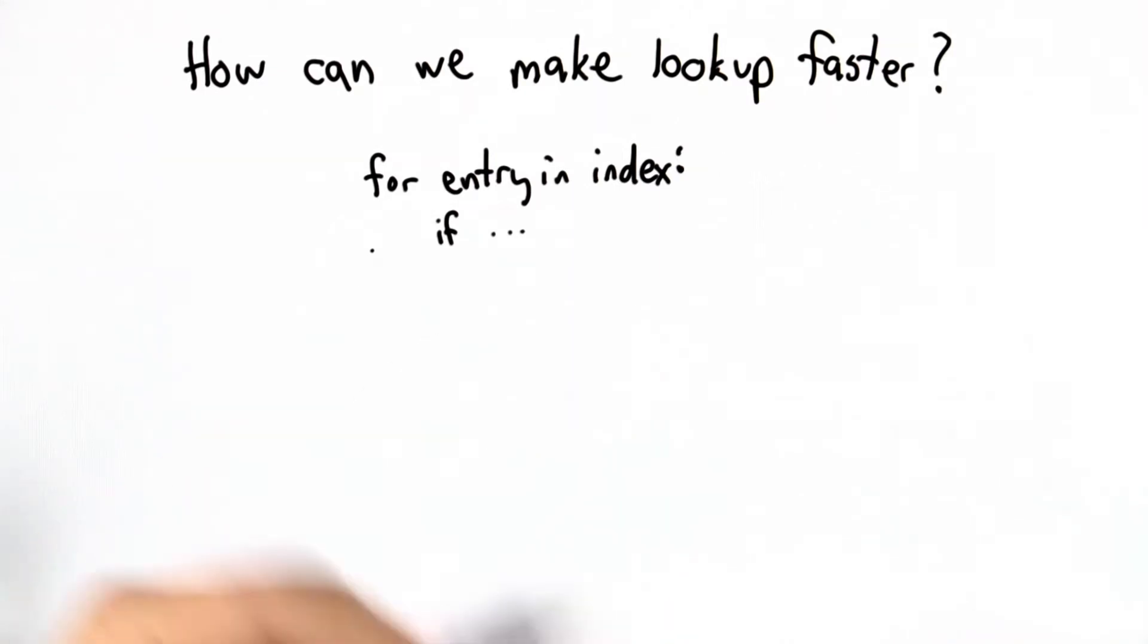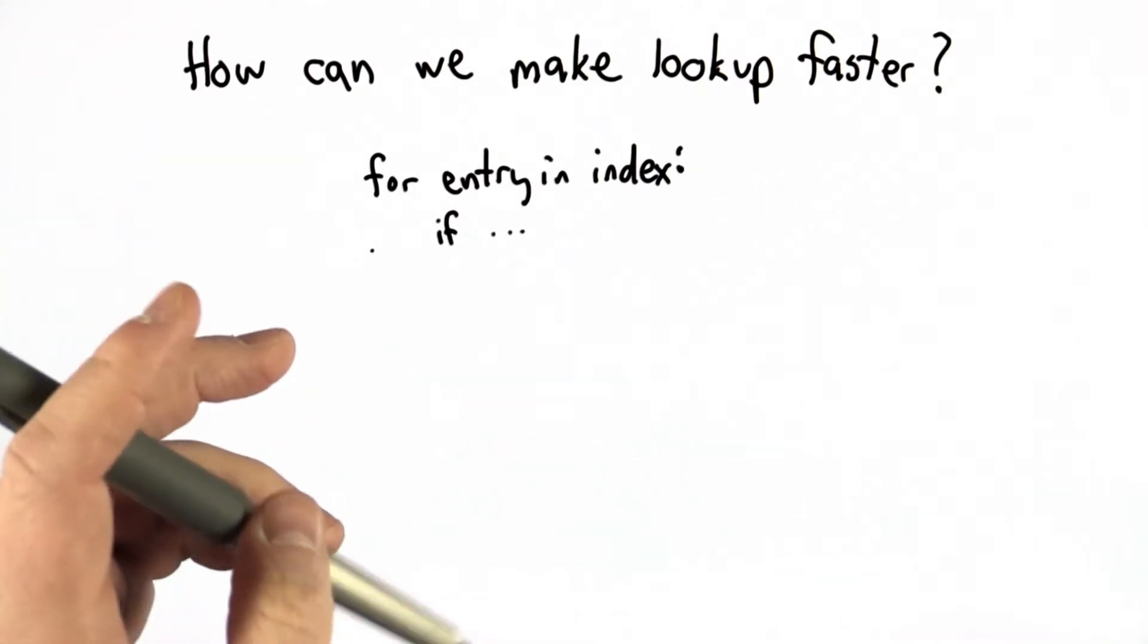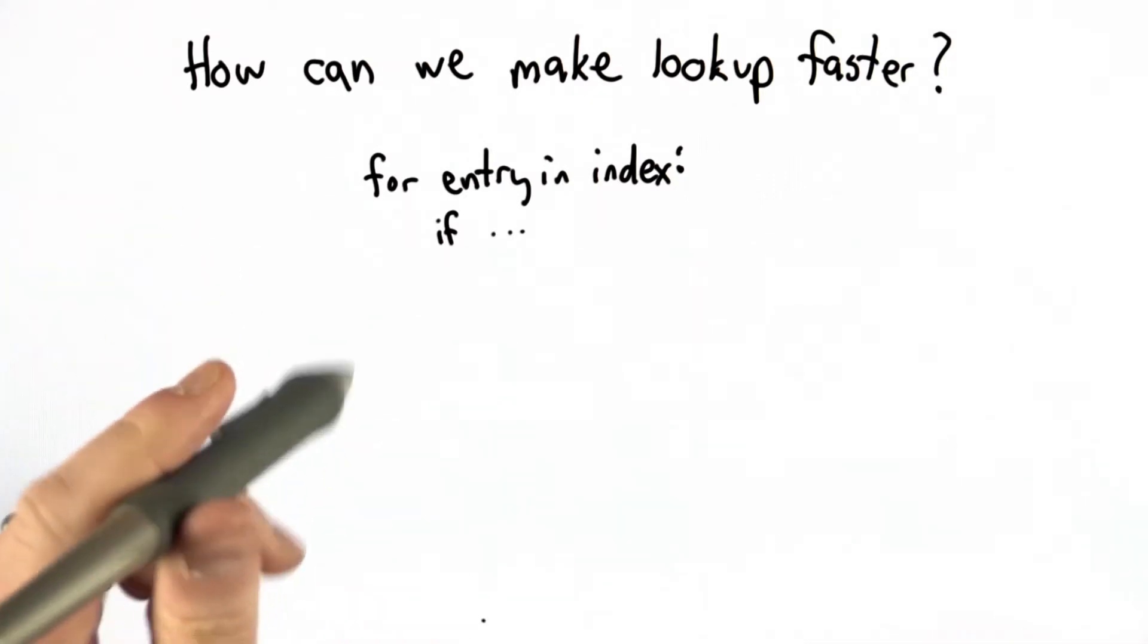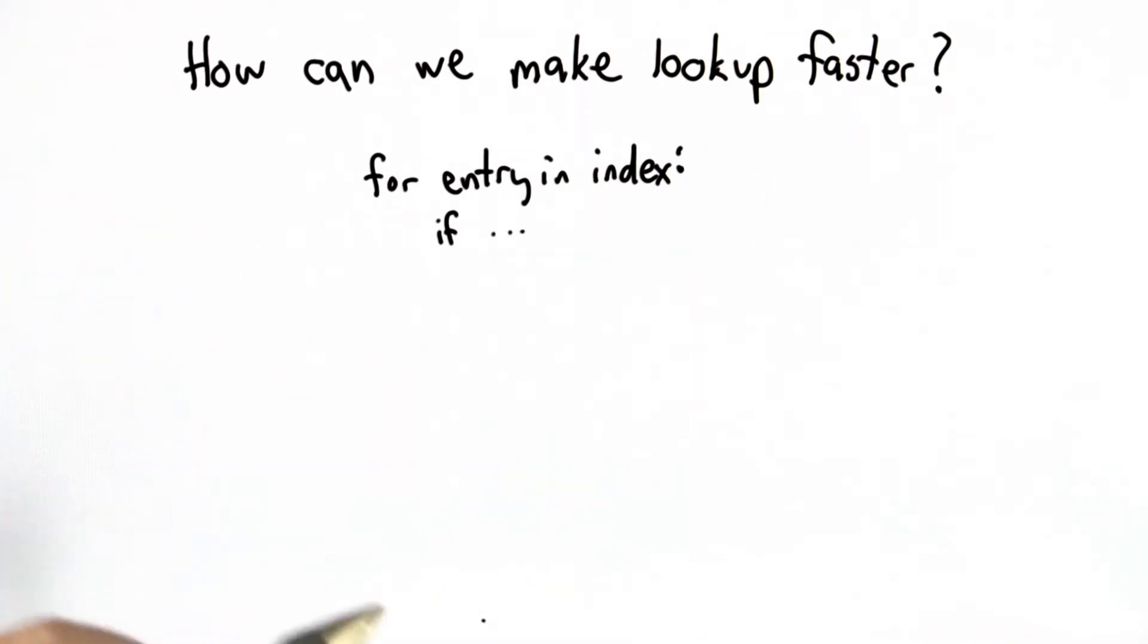This is not the way we use indexes in real life. If you're looking for a word in the index of a book, you don't have to look through every single entry to see if that word exists. You can jump around. And the reason you can jump around is because the entries in the index are sorted.